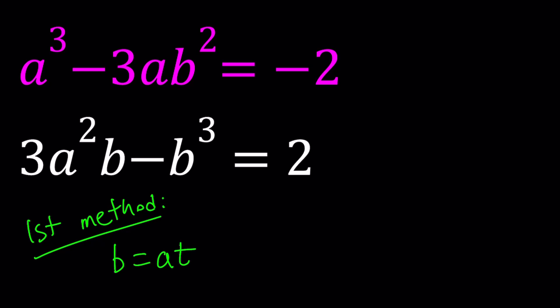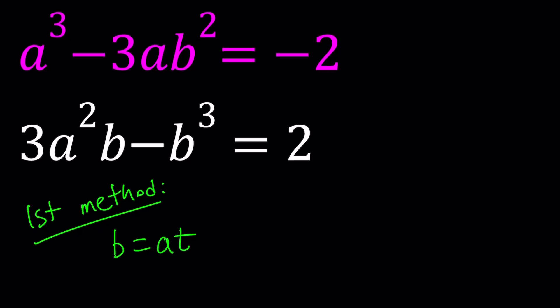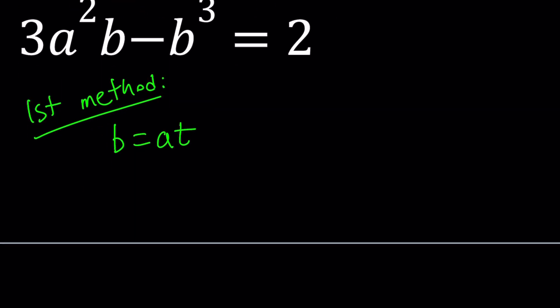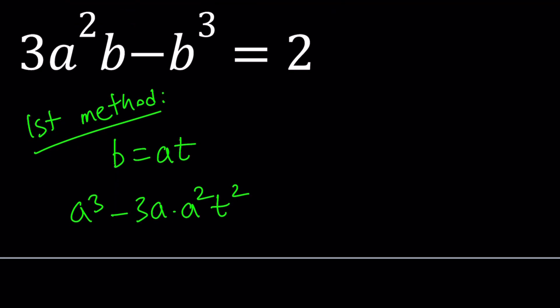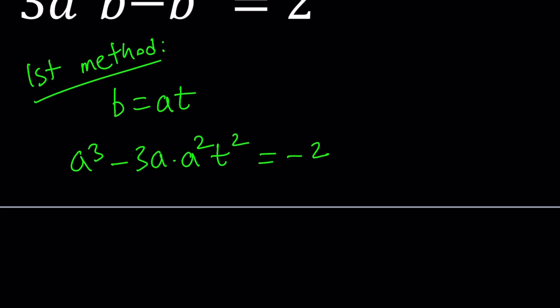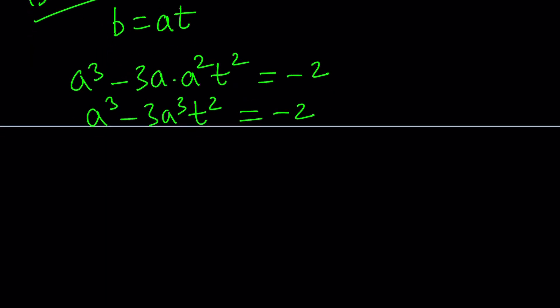We have a³ and 3ab². Notice that the sum of the powers is always 3, so I can replace b with a times something. How about b = at? Let's substitute bat into the first equation.